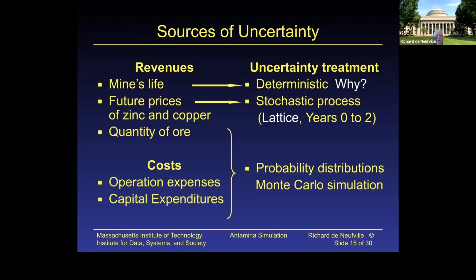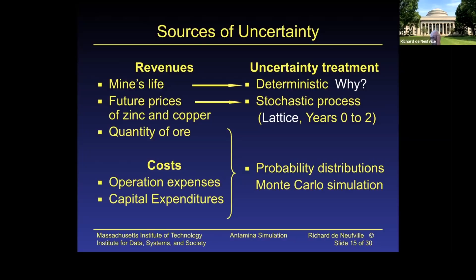Here is a listing of the sources of uncertainty in terms of the mine's life. In this case they determined it was 20 years — at the discount rates being used, the value beyond 20 years didn't amount to very much given the other uncertainties, so they didn't calculate beyond that, though they easily could have. You also had the future prices of zinc and copper, done through a stochastic process and lattice analysis. Then there was the quantity of ore, the cost, and so on — all handled using probability distributions and Monte Carlo simulations.